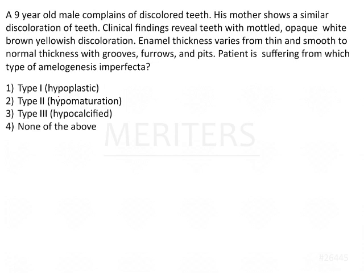It's been made very clear that the patient has amelogenesis imperfecta. We just have to identify, based on the classification, what type of AI it is. We have three types of amelogenesis imperfecta: hypoplastic, hypomature, and hypocalcified.